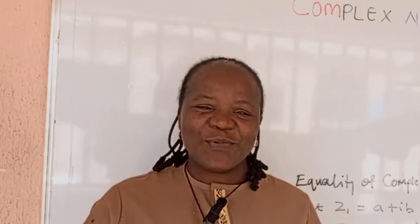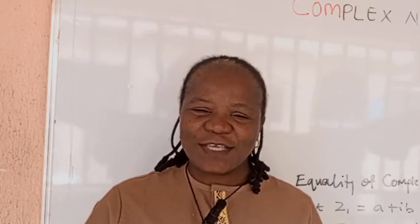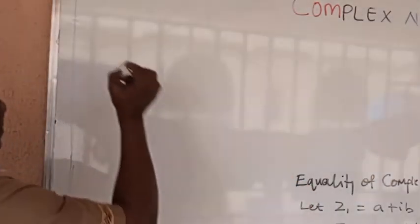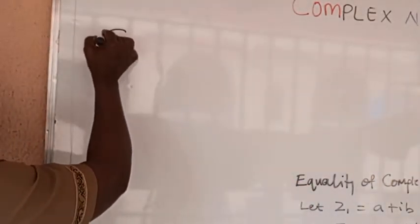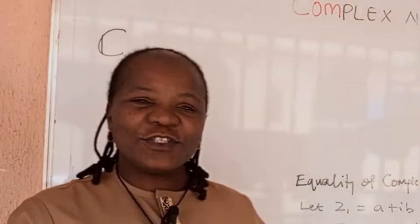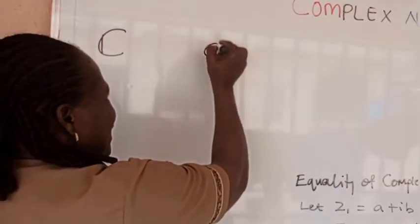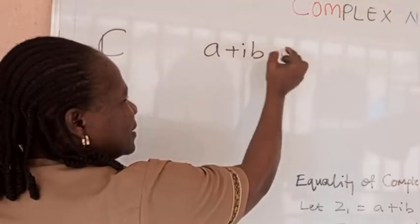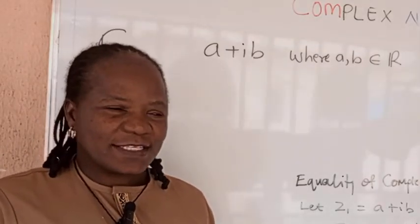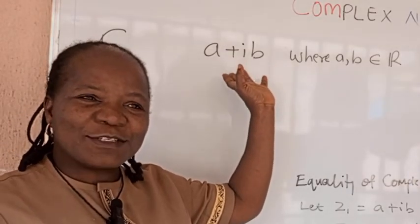In this video we introduce an expanded number system called the complex number system, which is denoted by this. A complex number is a number of the form a plus ib, where a and b are real numbers.